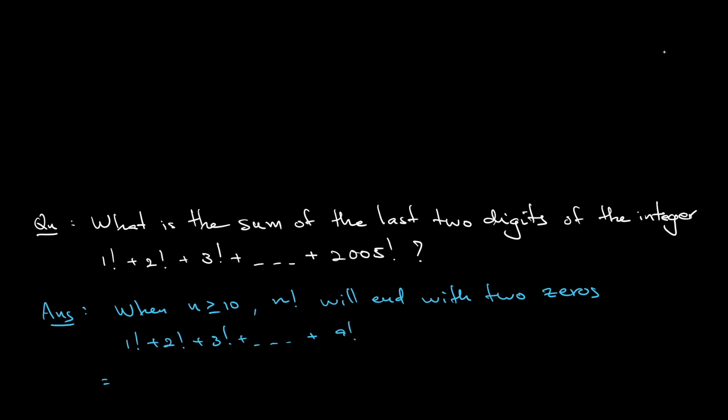So 1 factorial, the last digit would be 0, 1. 2 factorial, you just need to times 2, so that would be 0, 2. 3 factorial, you need to multiply it by 3, so you will get 6, so it's 0, 6. 4 factorial, multiply by another 4, you will get 24.